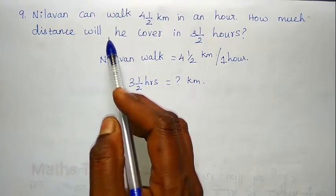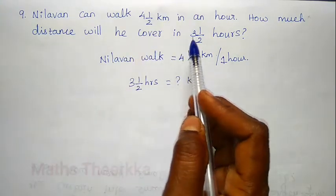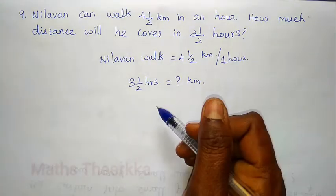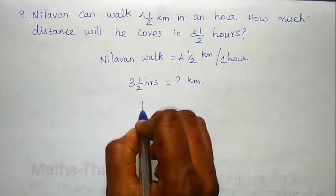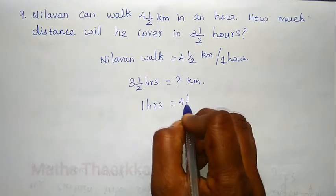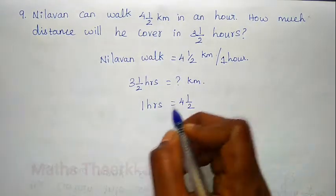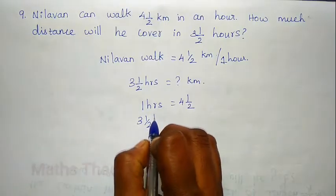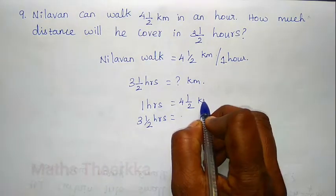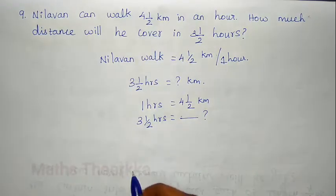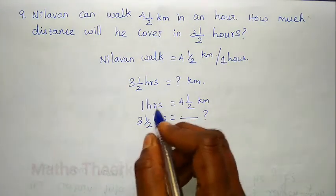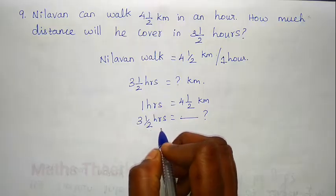To find the distance covered in 3 and a half hours, distance equals speed multiplied by time. Speed is 1 and 4 km per hour, time is 3 and a half hours. So we multiply 1 and 4 by 3 and a half.